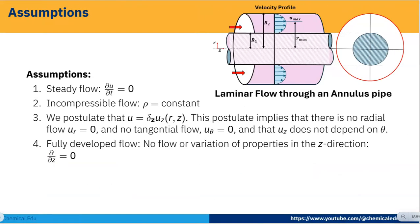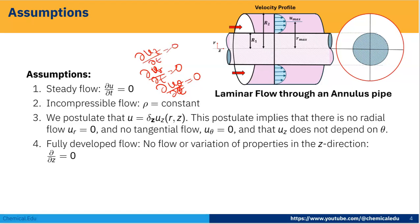Now we take the assumptions. The first assumption is that the flow is steady, so ∂U/∂t = 0, meaning ∂U_R/∂t = 0. This is steady flow, and U represents components in R, theta, and Z directions. The second assumption is incompressible flow, meaning density rho is constant.